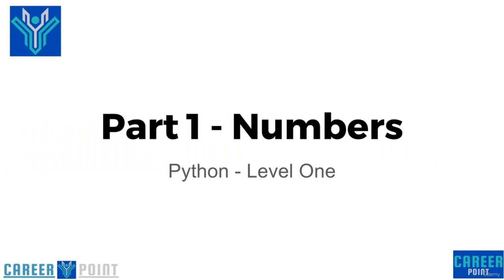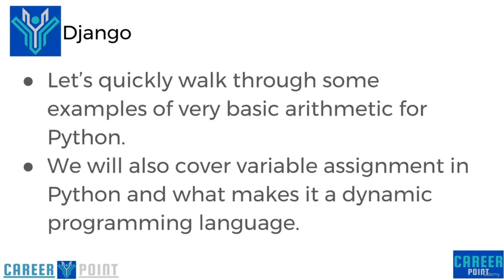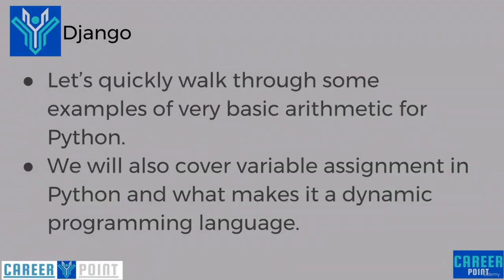Hello everyone and welcome to part one: Numbers. Numbers in Python have two main forms — integers and floating point numbers. Integers are whole numbers and floating point numbers have a decimal in them. So for example, an integer is something like 23, and a floating point number is something like 23.5 or 23.0. Let's quickly walk through examples of some basic arithmetic for Python, and we're also going to cover variable assignment and what makes Python a dynamic programming language.